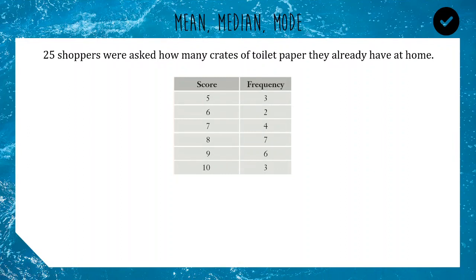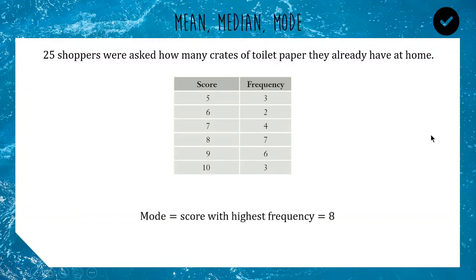Back to our 25 shoppers with crates of toilet paper — let's touch very briefly on the mode, which hopefully you're familiar with. It's just the most common score, the score that occurred the most, aka highest frequency. In this case it's clearly a frequency of 7, which corresponds to a score of 8.